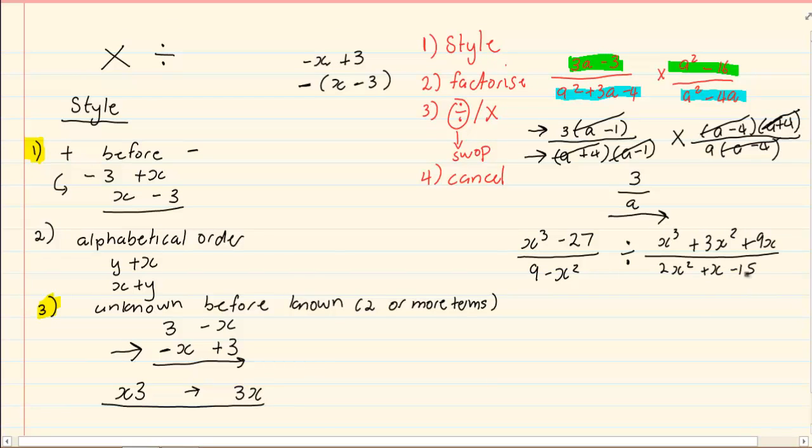Now let's first look at the style. If you would notice, 9 minus x squared is not the correct style. We need to change it. Now if I make it minus x squared plus 9, which means now I'm putting an unknown before known, then the first rule of plus and minus is not working. So I take out a common and I'm left with x squared minus 9.